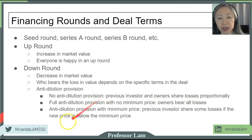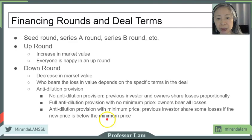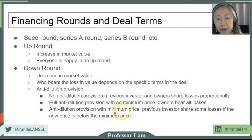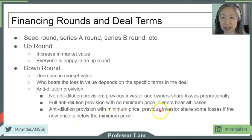And then there is a case where the anti-dilution provision has a minimum price. What that means is that if the new market value — the new price — is above the minimum price, the owner takes all the losses. But if the new price is below the minimum price, then the investor will share some of the losses.